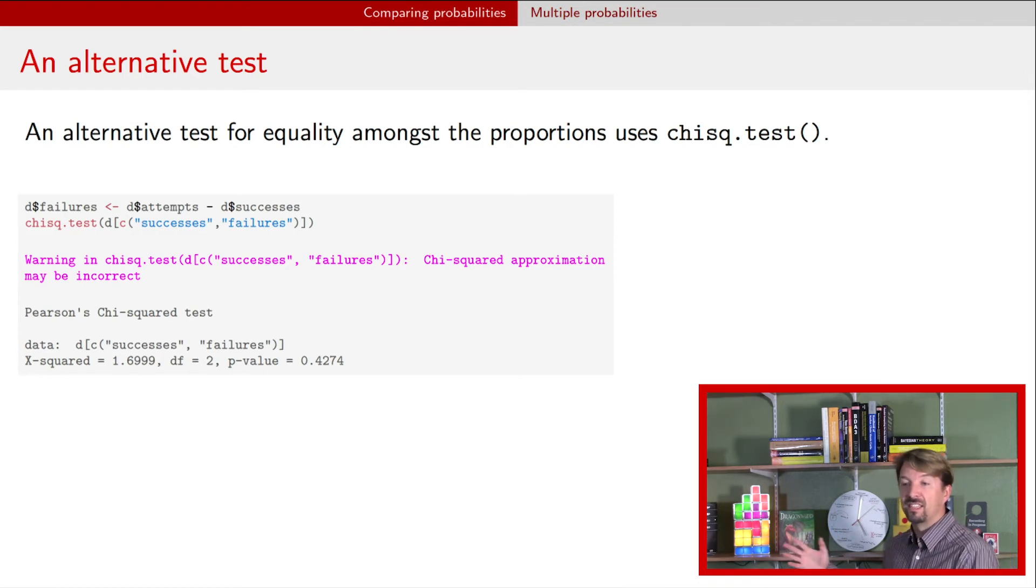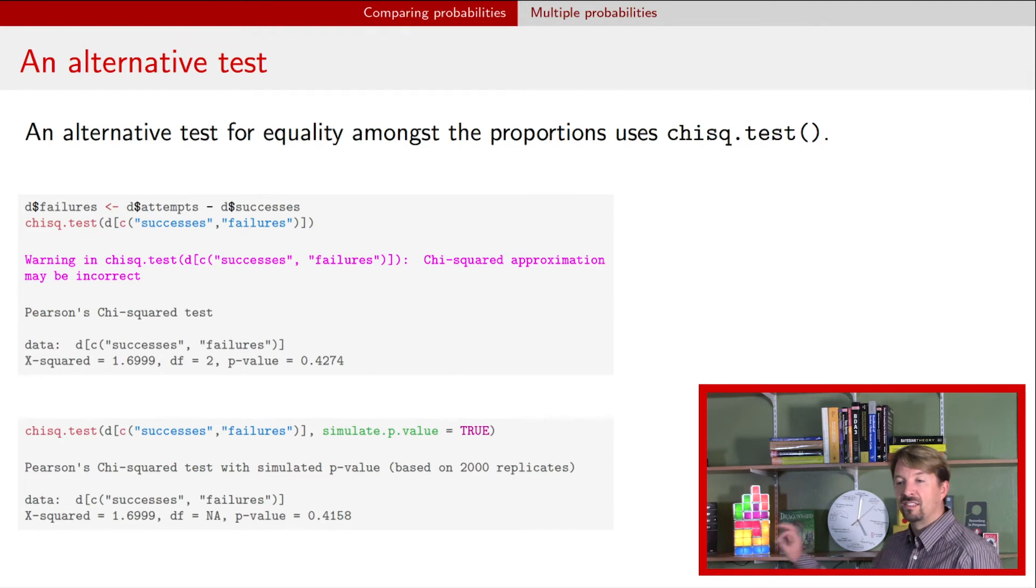An alternative to using that prop.test is something called this function chi-square test. And if you do it by default, you still get the same warning. But you can do this simulate.p-values is true, and that uses a different approach that doesn't have the same problems. And so you can get a p-value associated with this more robust analysis. But you'll notice in this case, those p-values are about the same. So it's still not much strong indication that your data are incompatible with a model that has all of those probabilities equal and those binomial independent assumptions.